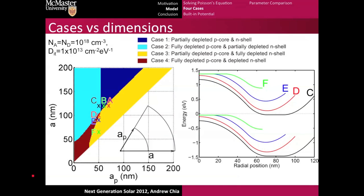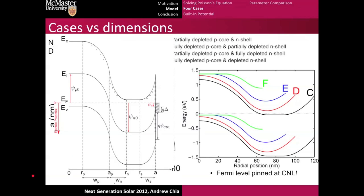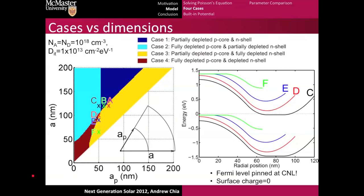This is the case where the Fermi level is pinned at mid-gap, which is the classic case. If we decrease the shell thickness further, what we end up getting is the Fermi level pinned at the charge neutrality level. If we remember our previous band diagram from before, since the surface states fill from the charge neutrality level up to the Fermi level, if the Fermi level is pinned at the charge neutrality level, that means we have that the surface charge is zero or the field is zero at the surface, as you can see by the flat bands.